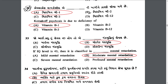If the IQ level is 45, which level of mental retardation is it classified as? If the IQ level is 45, it is classified as moderate mental retardation. Mental retardation has four levels: mild (IQ 55–70), moderate (IQ 40–55), severe (IQ 25–40), and profound (IQ below 25).